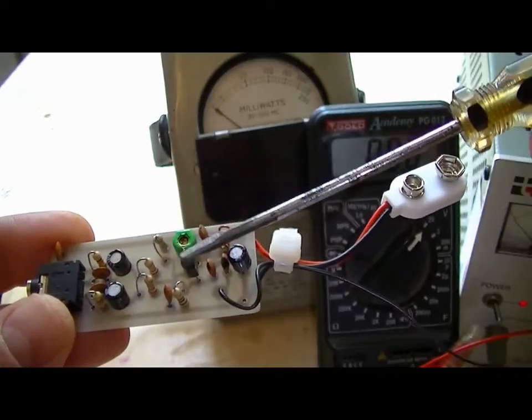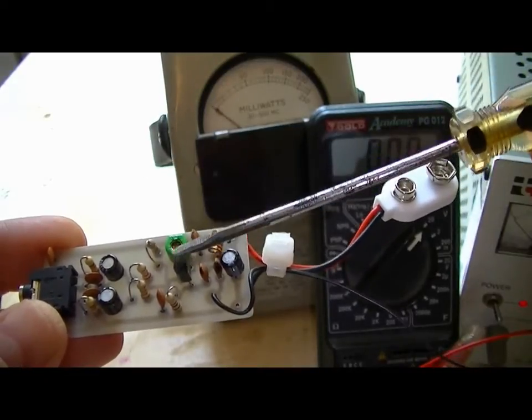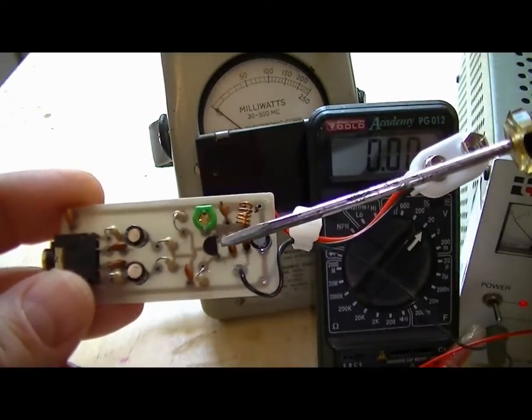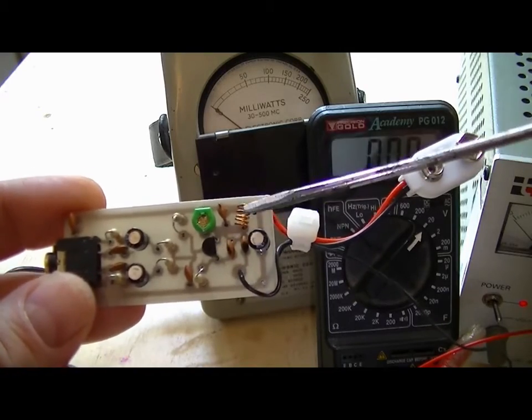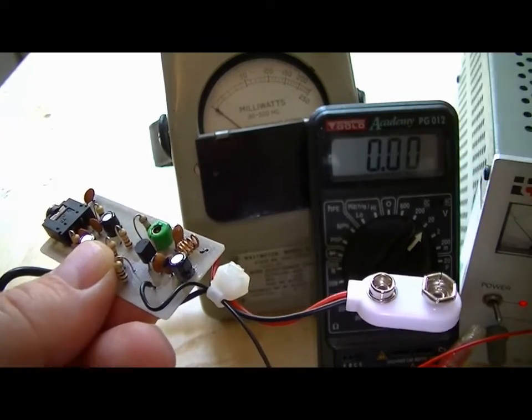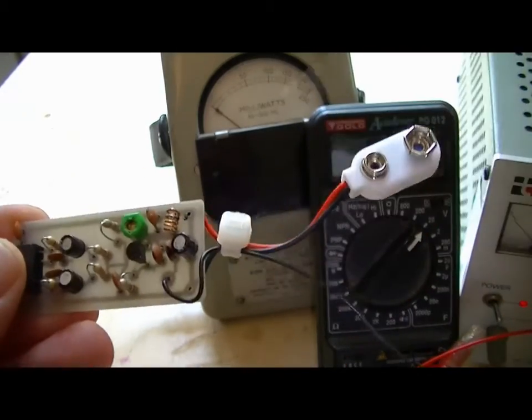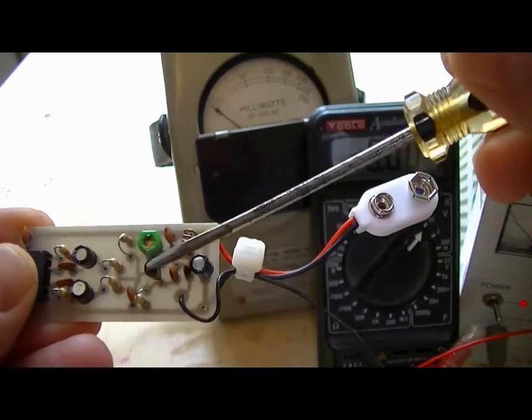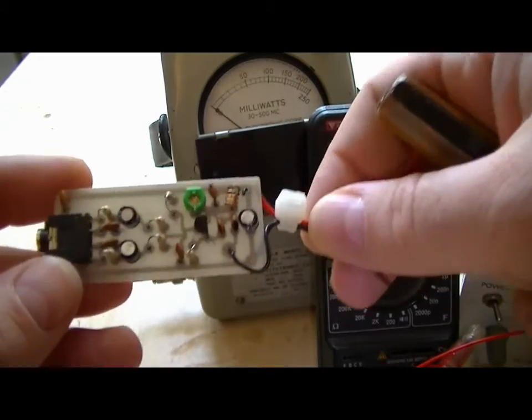Single transistor, this one's a 2N3904. It's a TO92 package, just a standard bipolar NPN transistor. It's just a normal common transistor, it's not an RF transistor of any sort.